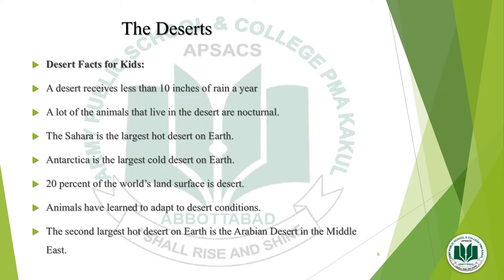Some other facts about deserts: a desert receives less than 10 inches of rain a year. A lot of animals that live in the desert are nocturnal. The Sahara is the largest hot desert on earth. Antarctica is the largest cold desert on earth. 20% of the world's land surface is desert. Animals have learned to adapt to desert conditions. The second largest hot desert is the Arabian Desert in the Middle East.